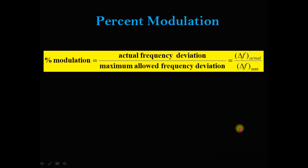The percent modulation is equal to the ratio of the actual frequency deviation to the maximum allowed frequency deviation: delta F_actual / delta F_max.